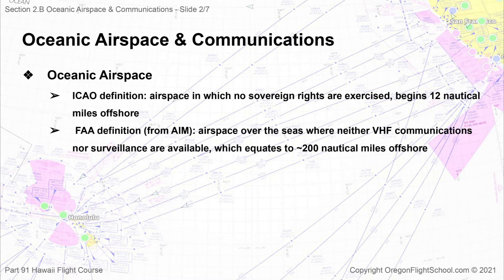The FAA Airmen Information Manual, on the other hand, defines oceanic airspace as any airspace over the seas where line-of-sight communications or ATC surveillance via radar or ADS-B are not available. Air traffic control is provided using procedural control and procedural separation in accordance with ICAO. This means that as far as the FAA is concerned, oceanic airspace begins when radar contact or VHF radios are no longer available.